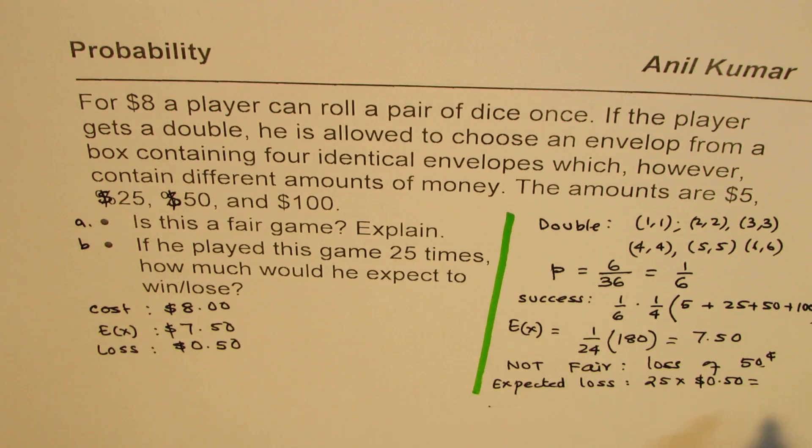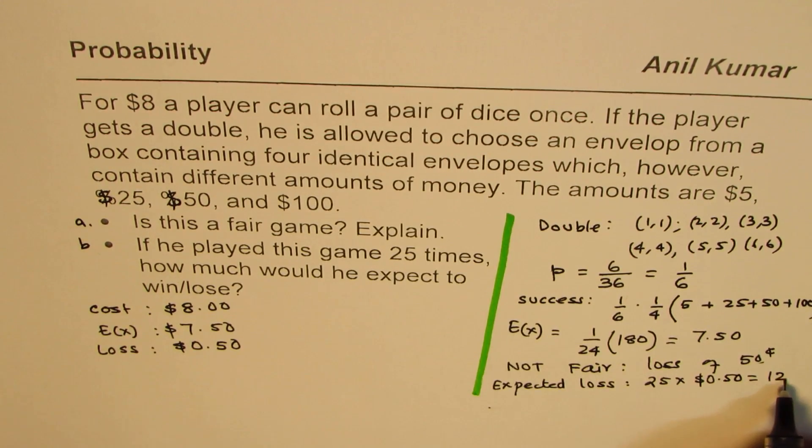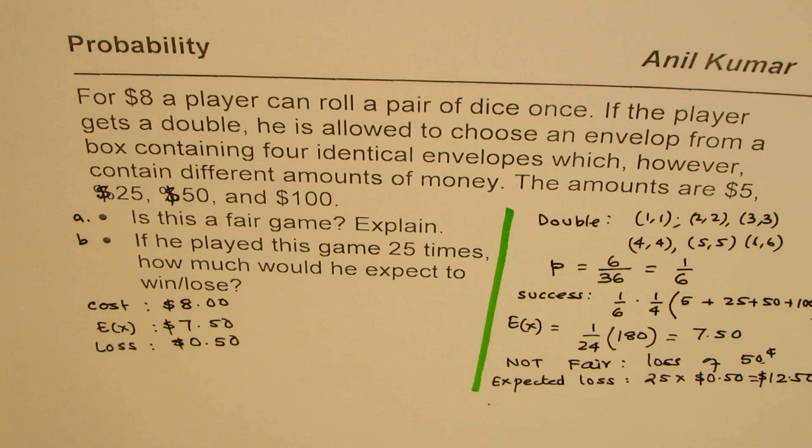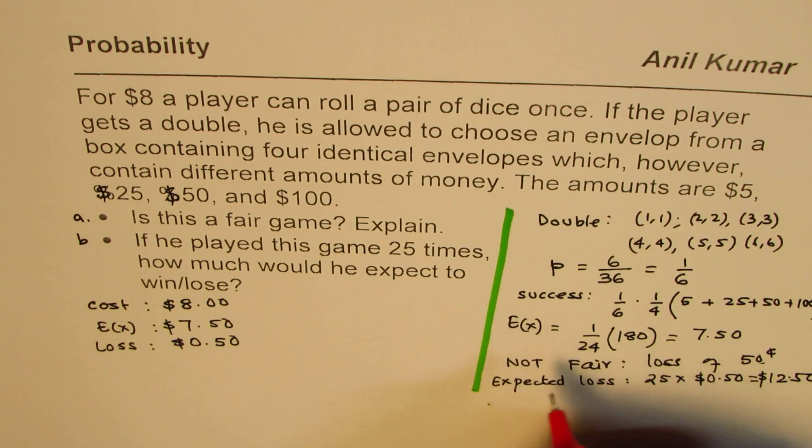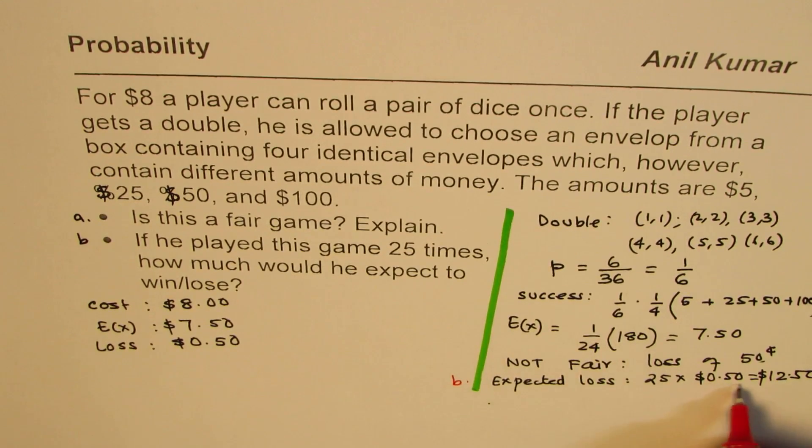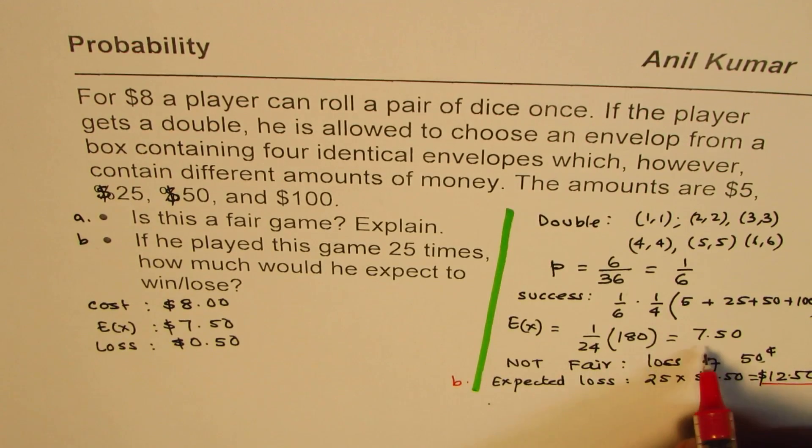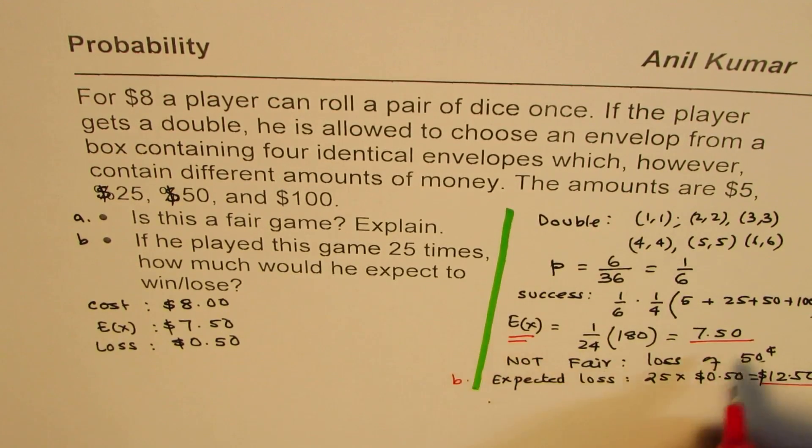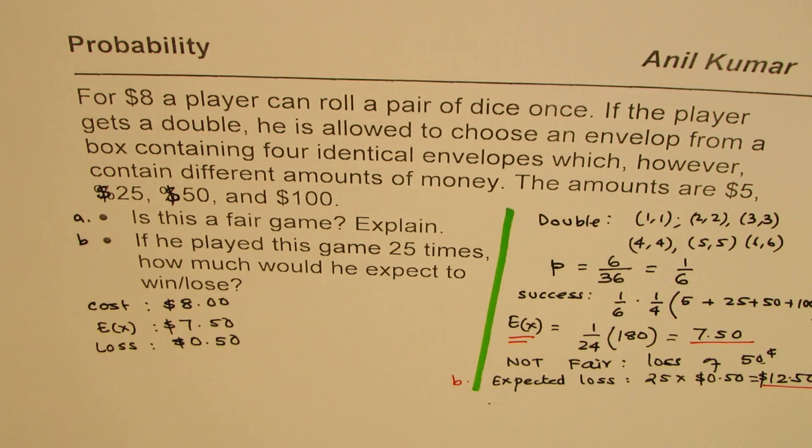25 times 50 cents is 25 times $0.50, so $12.50. So that is the expected loss. That is part B. We get both the answers here. Expected loss of $12.50 and expecting $7.50 in each game. That is what is expected value.